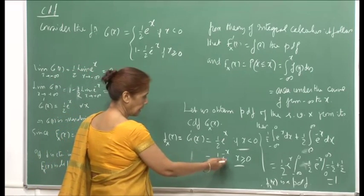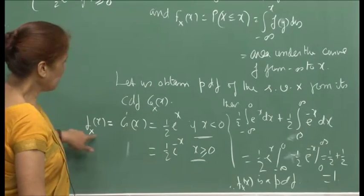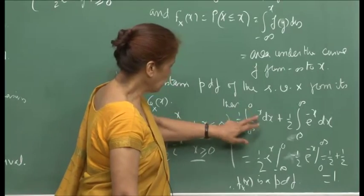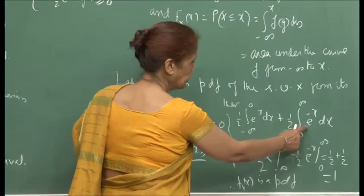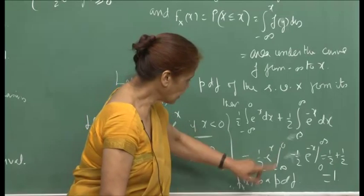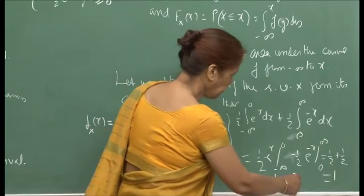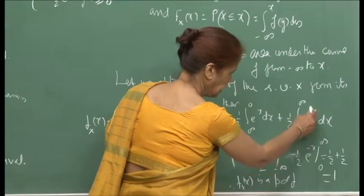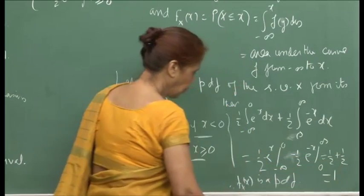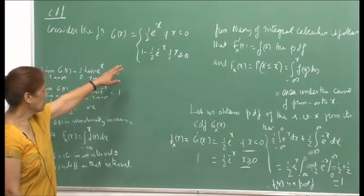We verify this is a valid PDF by integrating from minus infinity to infinity. The integral splits into (1/2) times the integral of e^x from −∞ to 0, plus (1/2) times the integral of e^(−x) from 0 to ∞. Each gives 1/2, so the total is 1. We have verified that f(x) is a valid PDF and that g(x) is the corresponding CDF.